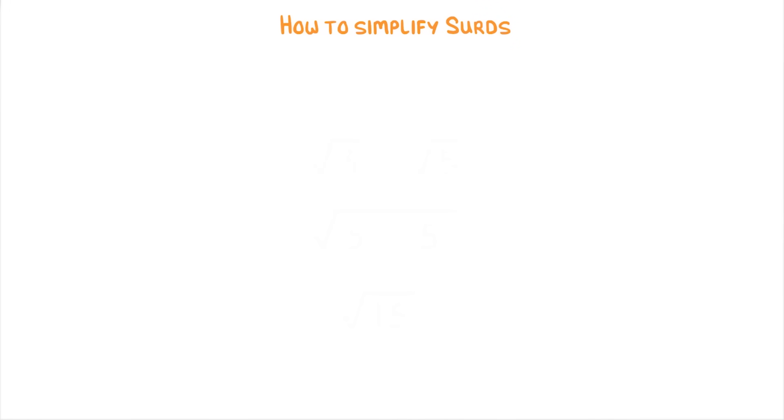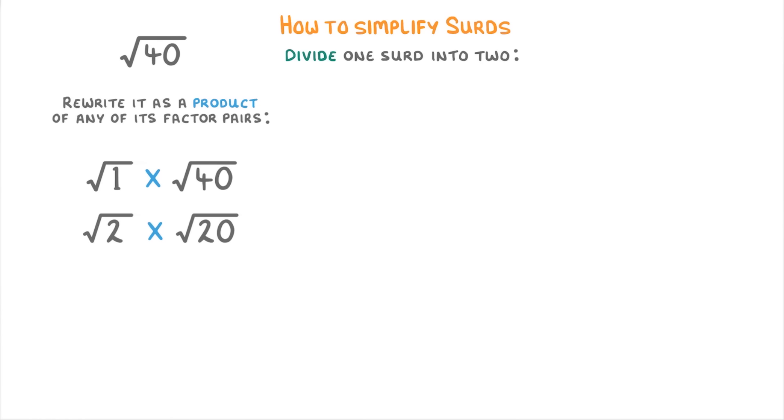This means that we can also go the opposite way and divide one surd into two. For example, if we took root 40, we could rewrite it as a product of any of its factor pairs: root 1 times root 40, root 2 times root 20, root 4 times root 10, or root 5 times root 8.